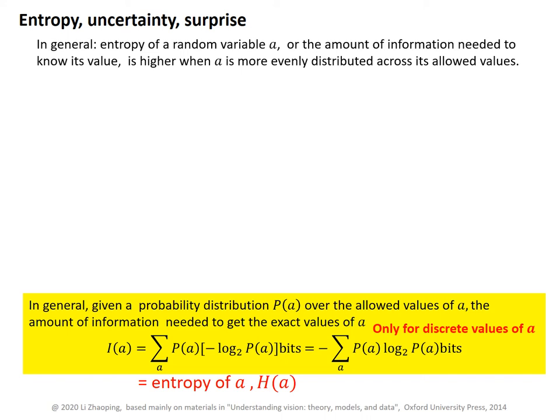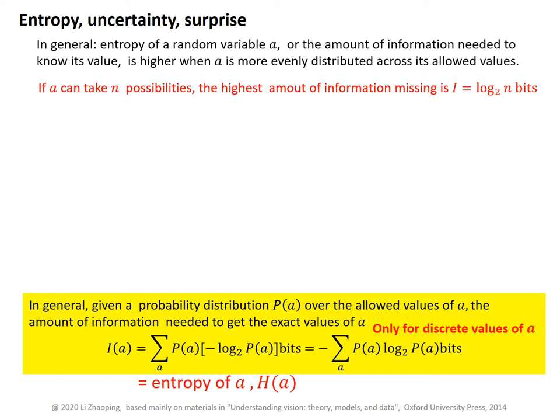In general, entropy of a random variable A — or the amount of information needed to know its value — is higher when A is more evenly distributed across its allowed values. If A can take N possibilities, the highest amount of information missing is then log base 2 of N bits. Therefore, we require, for example, 8 bits to know an integer between 0 and 255, for N equals 256 possibilities for A.